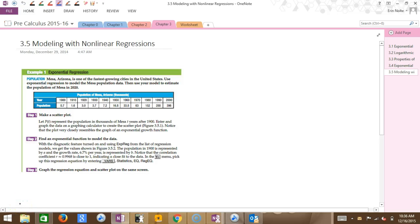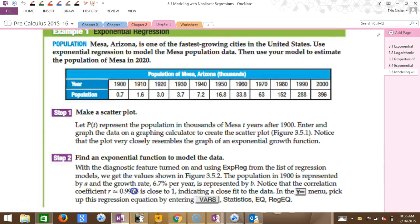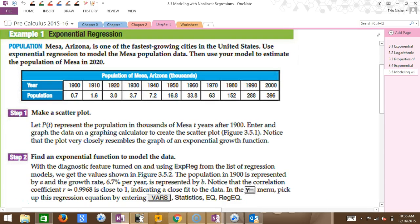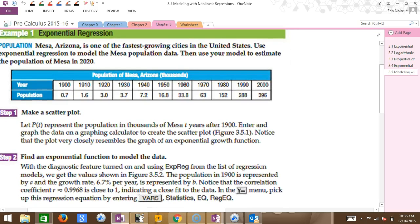Okay, now grab your graphing calculator. The idea of this section is that we're taking real-world scenarios and analyzing the data, coming up with an equation to best model the scenario. These are going to be nonlinear scenarios. This one is in Mesa, Arizona, a fast-growing city, and we're going to estimate the population in the year 2020.